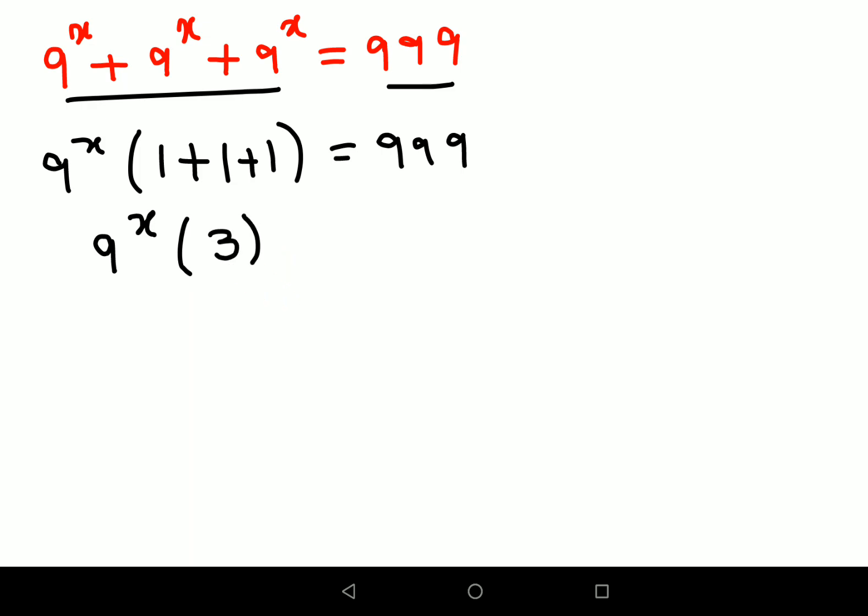Now in order to find the value of x, we'll divide both sides by 3. So this is cancelling, I'm getting 9 raise to x as 333. Now if you look closely, 333 can be written as 9 into 37.